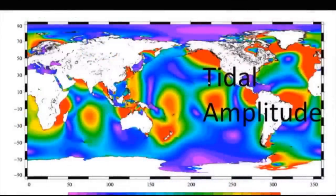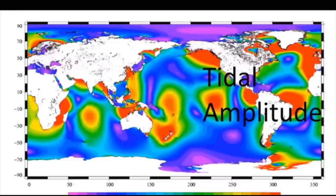This is a map of tidal amplitude, which is the difference between the low and the high tide in a given place. So what that means is that the low tide might be a meter below sea level and the high tide might be a meter above sea level. And that would be a tidal amplitude of two meters.